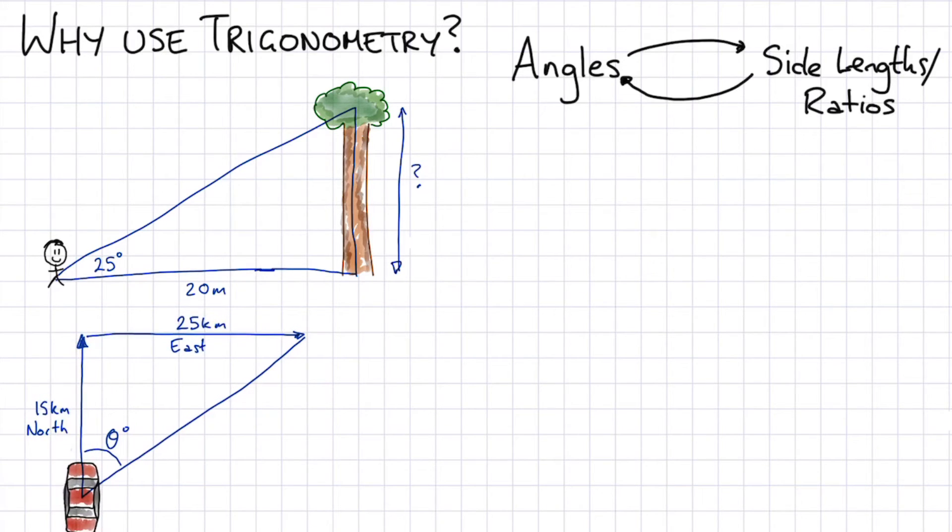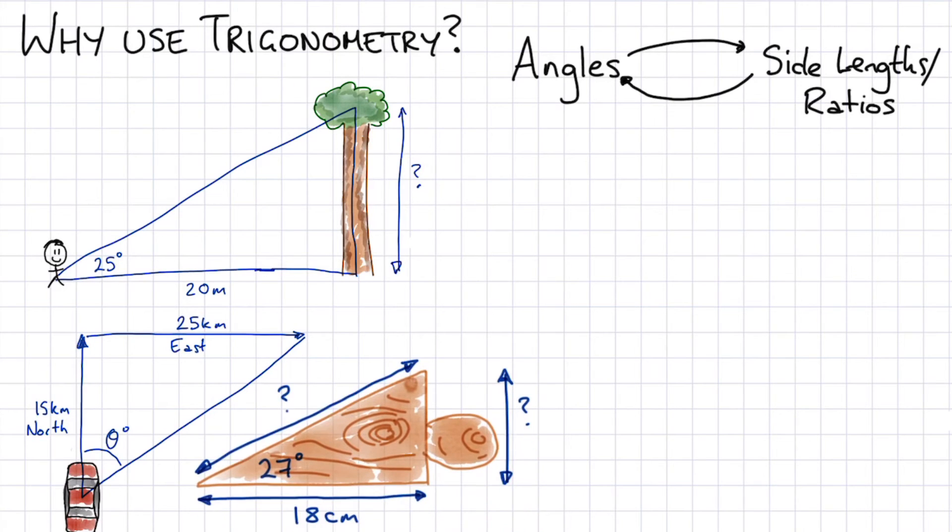Similar example here slightly different. What if you're driving in a car and you go 15 kilometers north then 25 kilometers east? What is the bearing or what angle do you make from the start from north to get to the final destination there? That's a really useful thing in terms of bearings, directions and that kind of thing. So using a map and seeing which direction you're going.